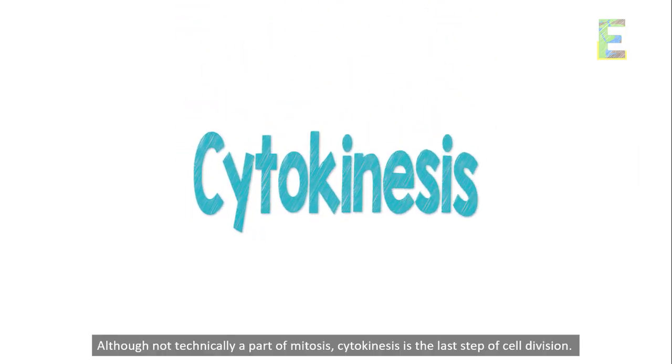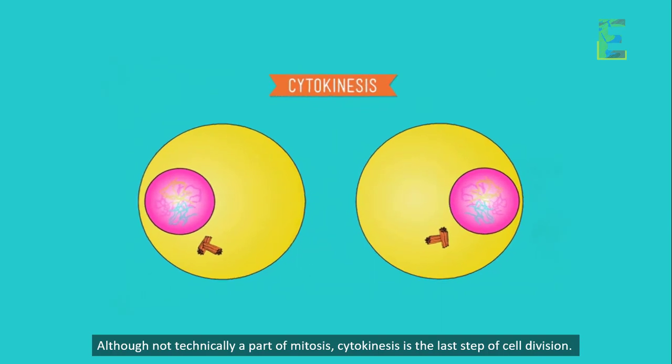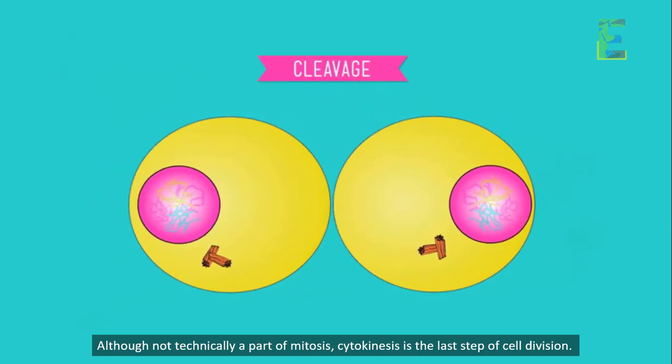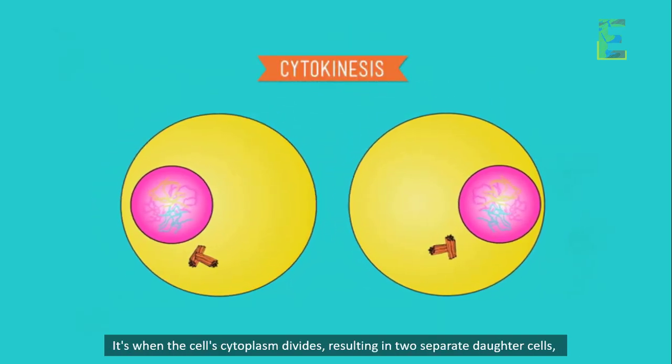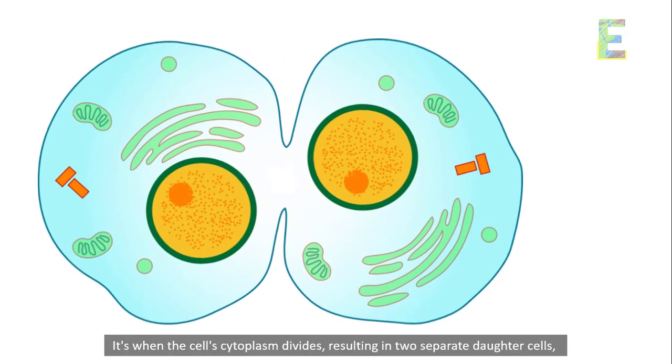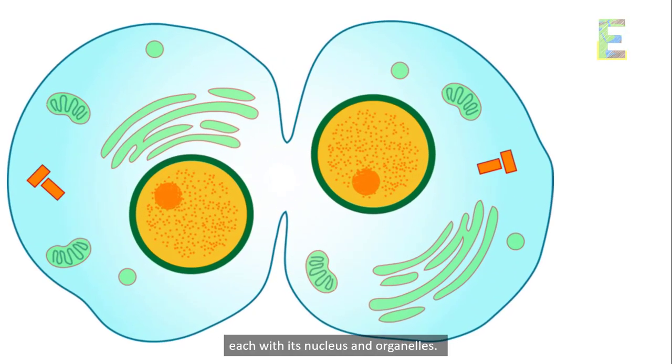Cytokinesis. Although not technically a part of mitosis, cytokinesis is the last step of cell division. It's when the cell's cytoplasm divides, resulting in two separate daughter cells, each with its nucleus and organelles.